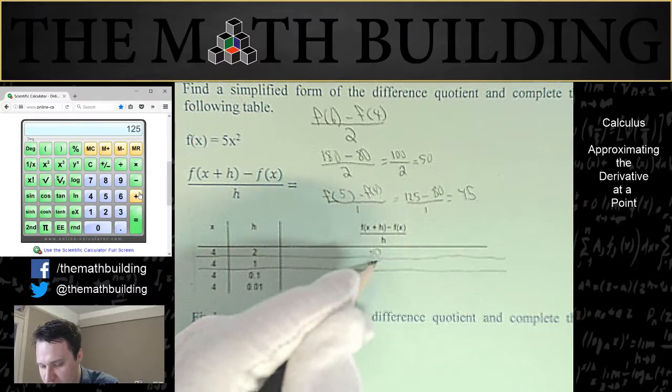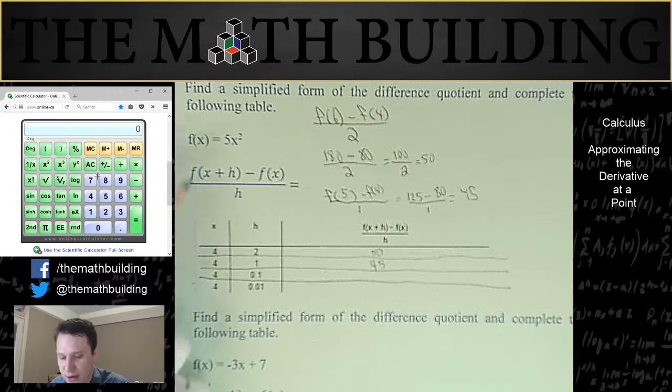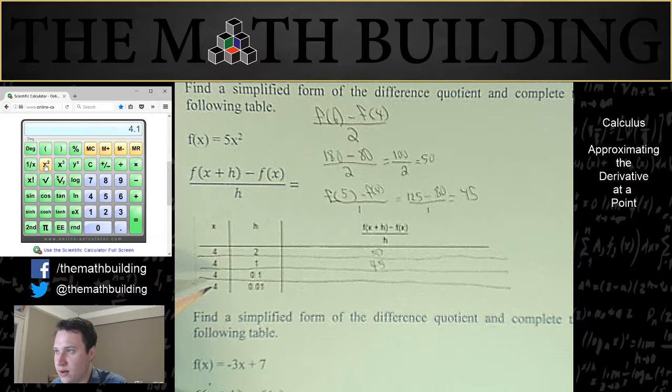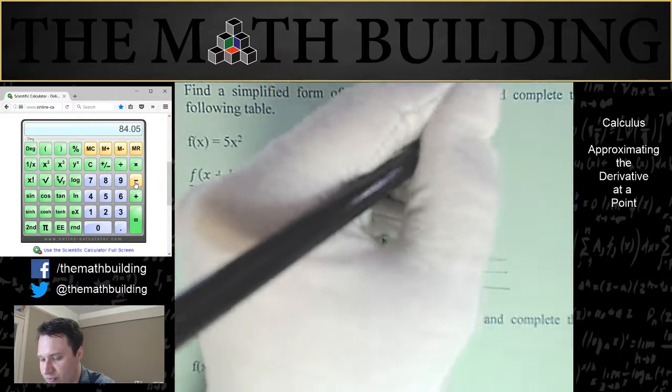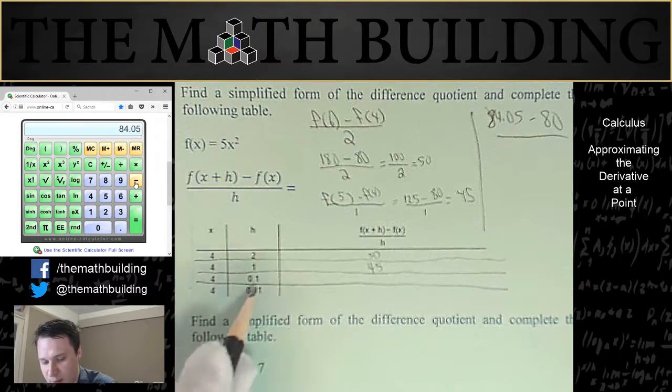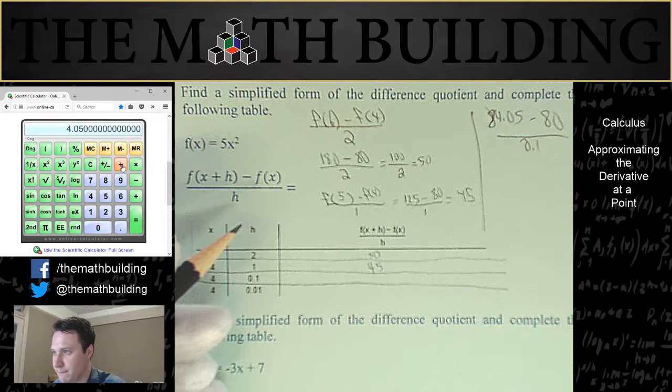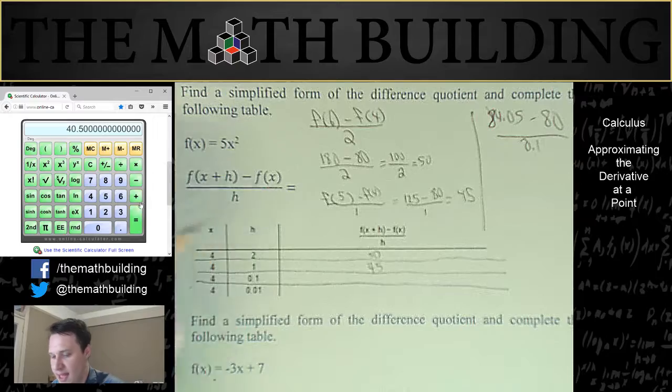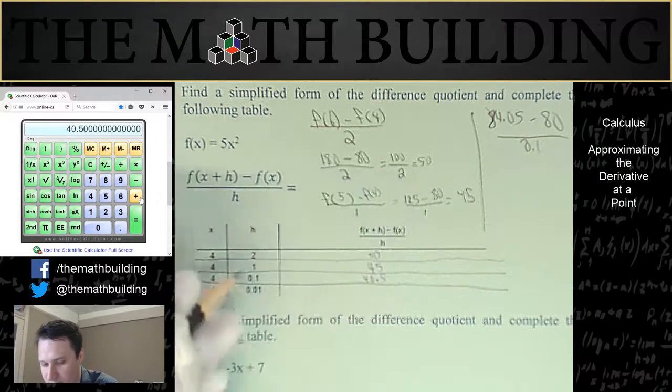So you can see that 50 wasn't a very good approximation. 45 is better, but I think we can do even better. Let's do h equals 0.1. So we're going to calculate f of 4.1, so that's going to be 4.1, because that's x plus h, 4.1 squared times 5. So this third one is going to be 84.05 minus 80, which is f of 4, and then divided by, this time we're dividing by h, which is 0.1. So let's take off the 80, divide by 0.1, and we get 40.5. Made a little mistake on the calculator.